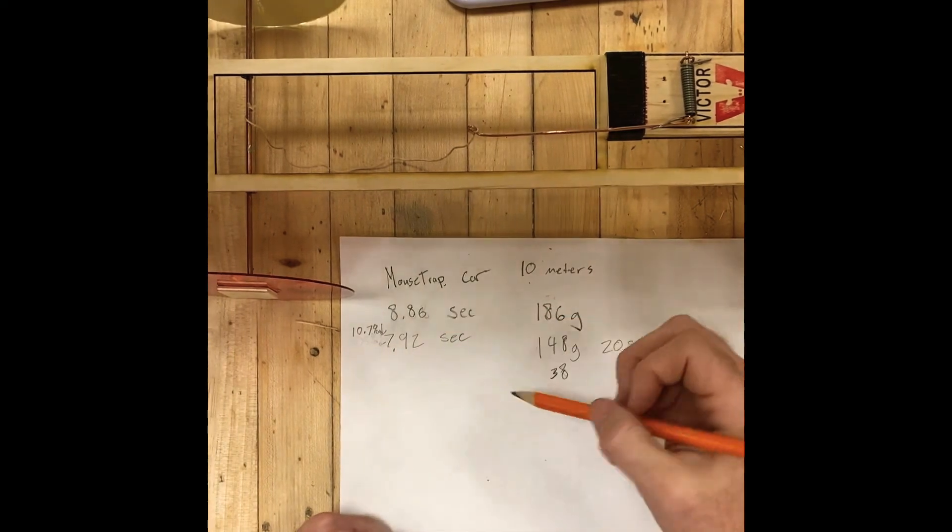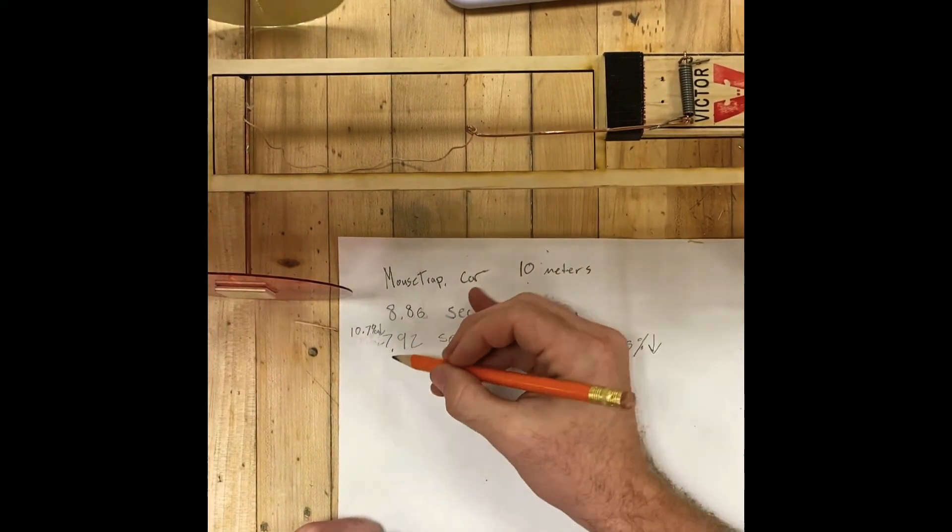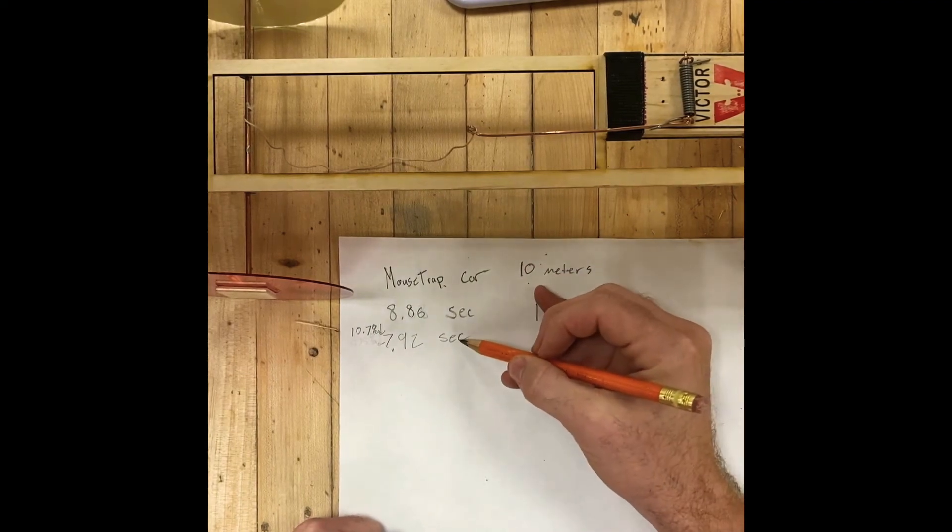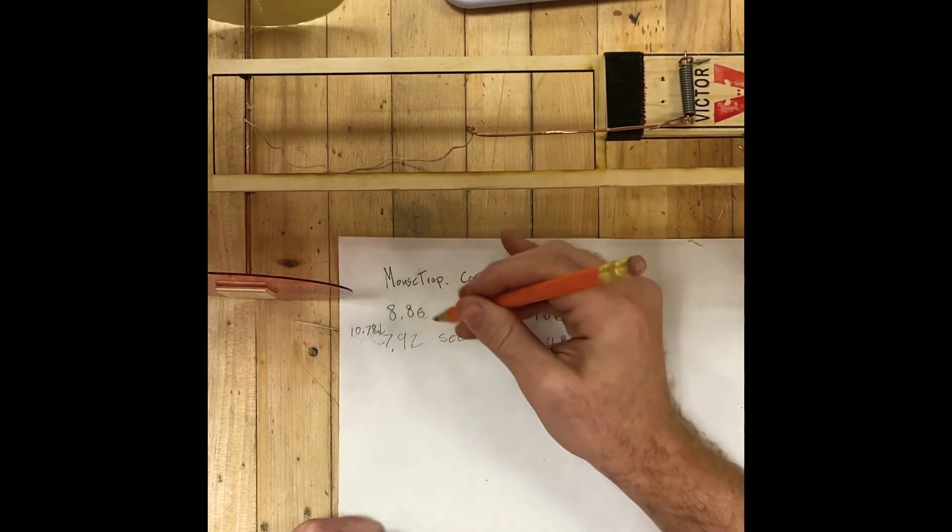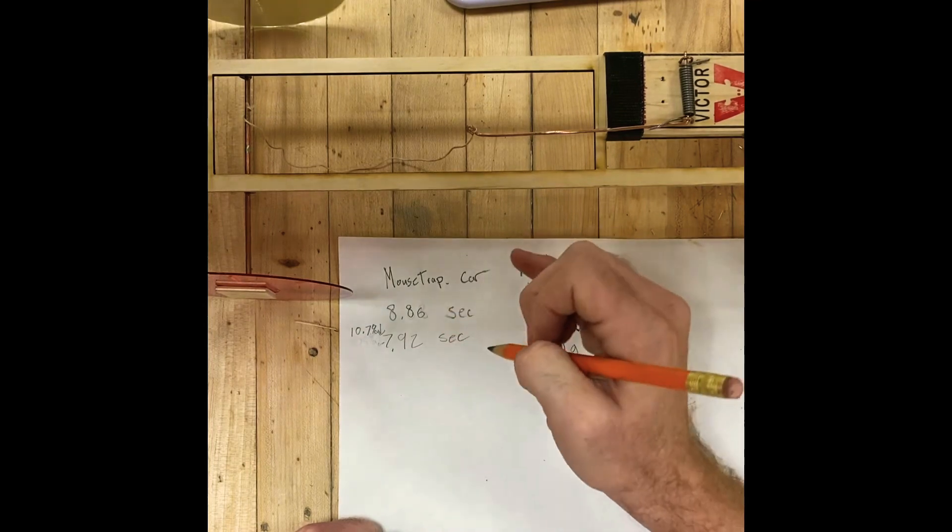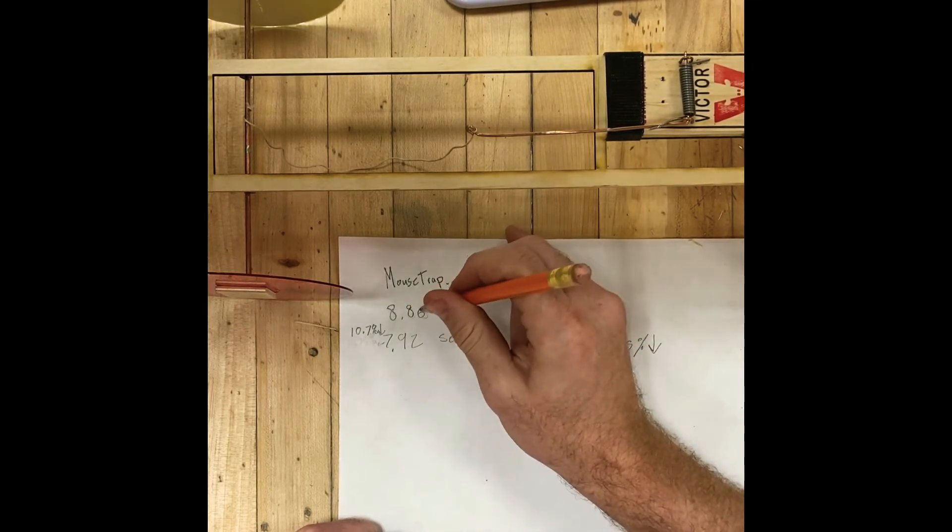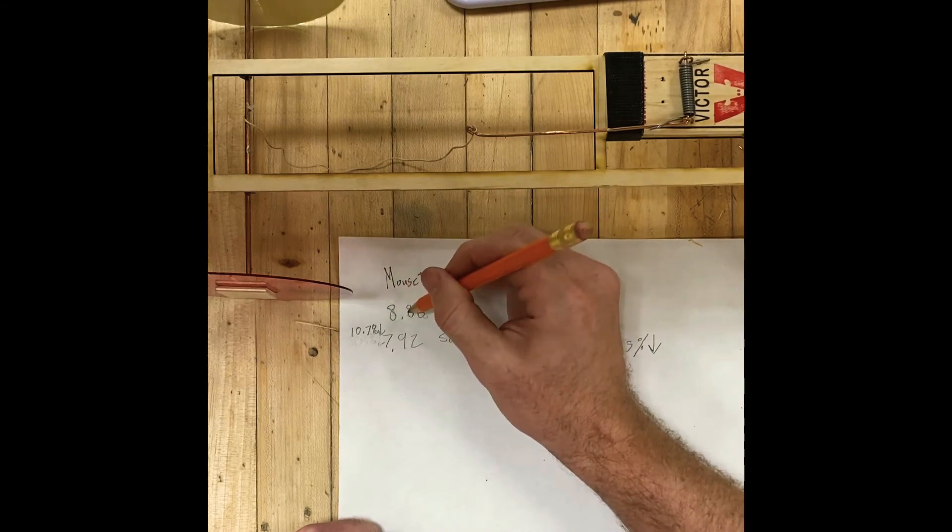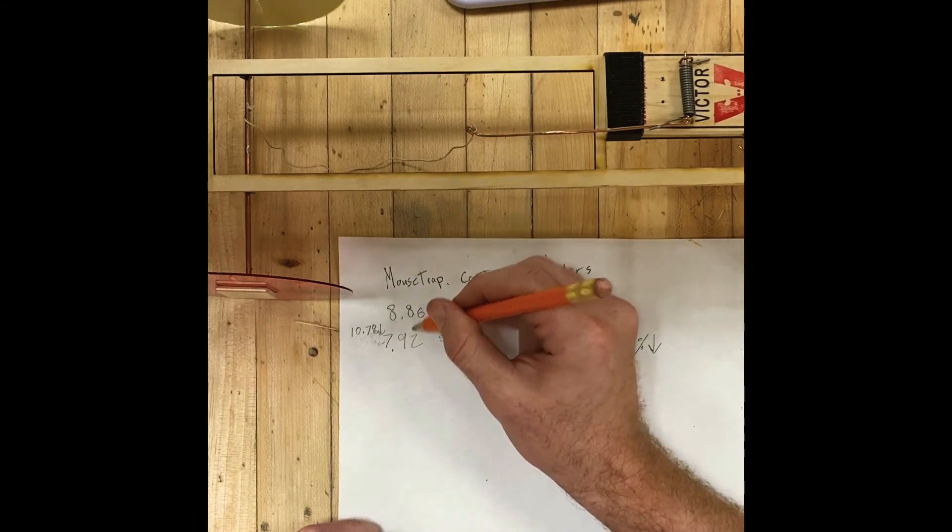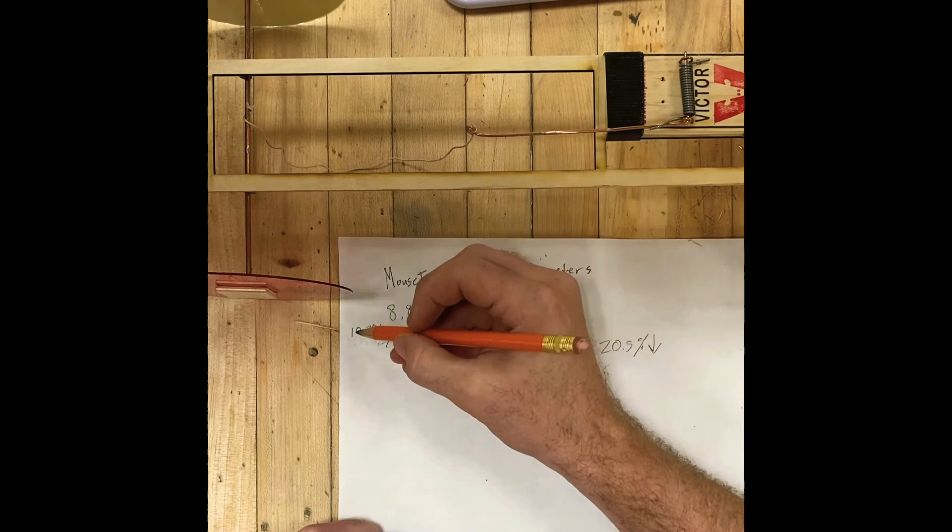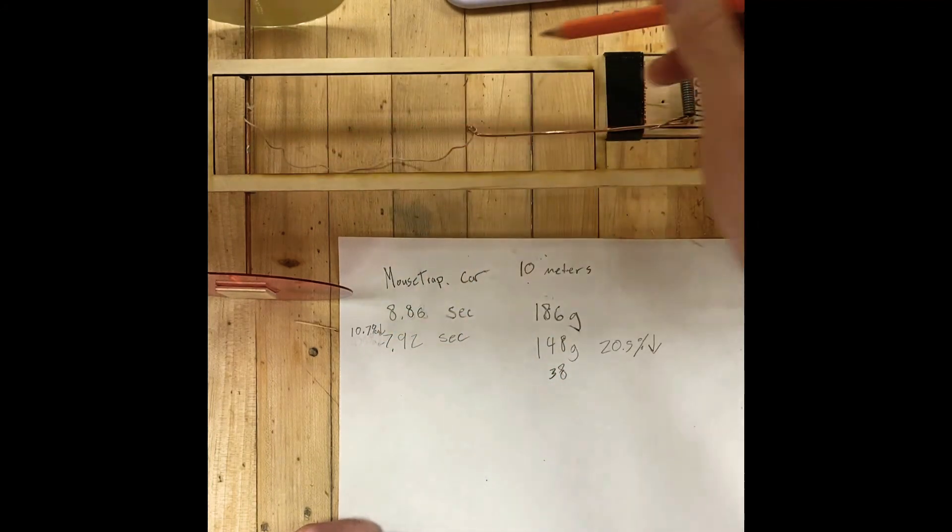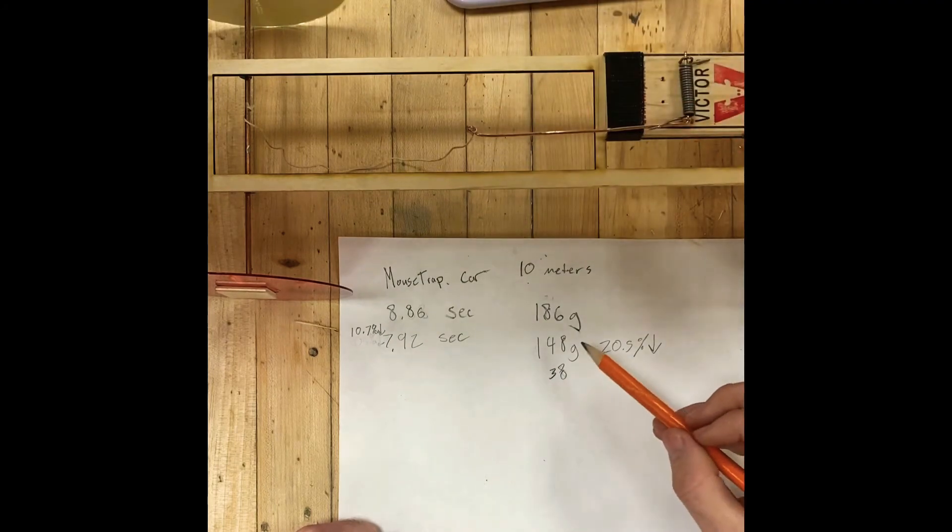So I just ran this mousetrap car and we went 7.92 seconds for 10 meters, compared to our first of 8.86. I earlier said 8.68, I accidentally had those numbers switched around there. So it was actually 8.86 down to 7.92.